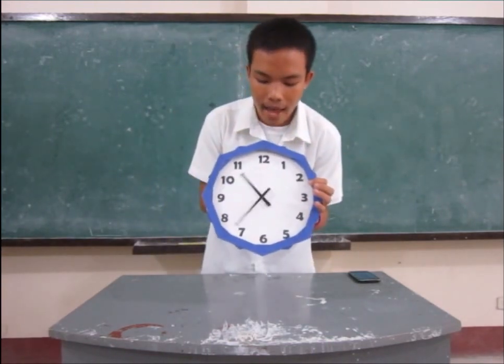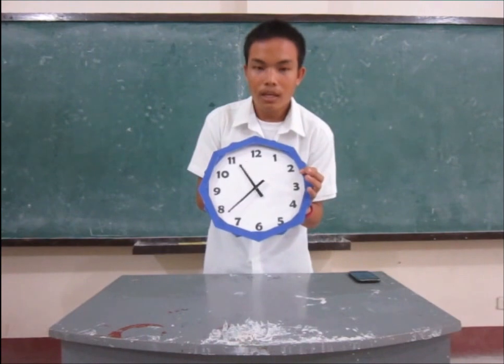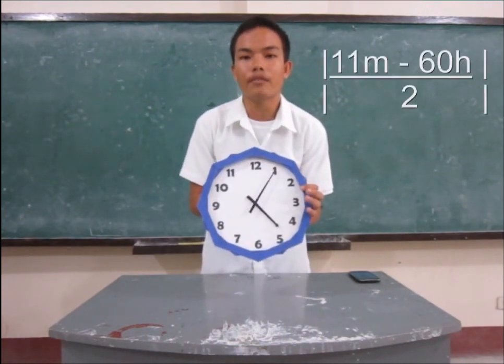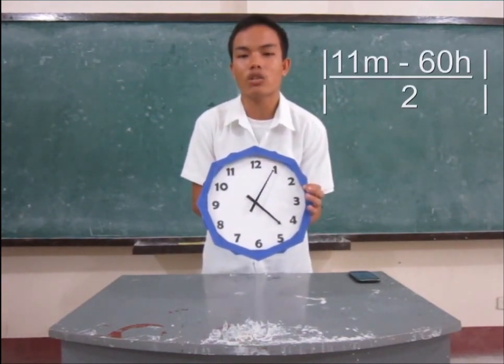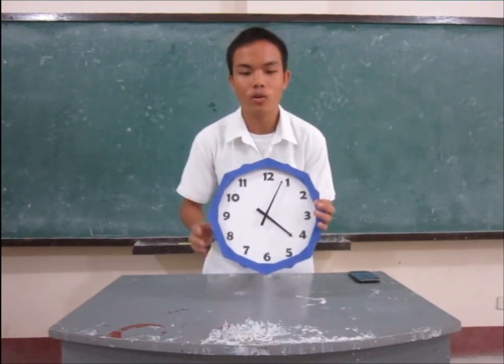In finding the angles of the hands of a clock, use the formula: the absolute value of 11m minus 60h all over 2. Copy? Okay, good.